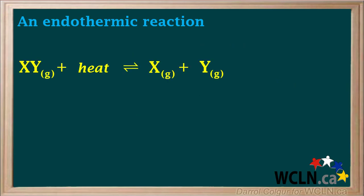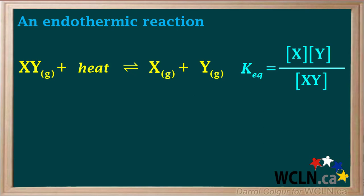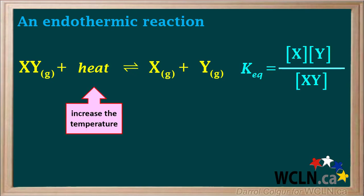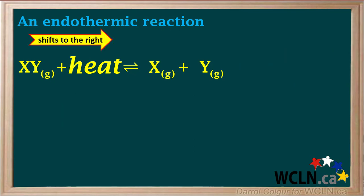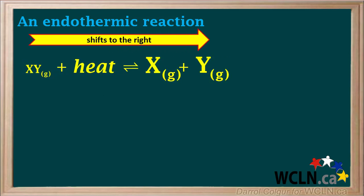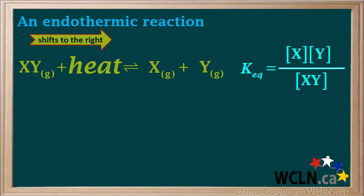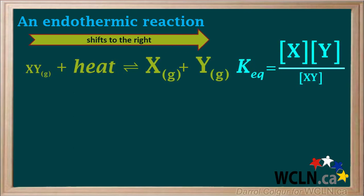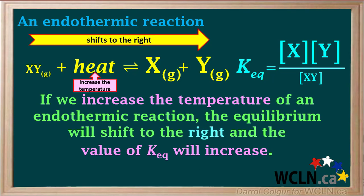Consider an endothermic reaction: XY + heat ⇌ X + Y. The KEQ expression is the concentration of X times the concentration of Y over the concentration of XY. If we increase the temperature, heat is added as a stress, and the equilibrium shifts to the right. The concentrations of products increase, the concentration of reactant decreases, so the numerator increases and the denominator decreases — the value of KEQ increases. Therefore, increasing the temperature of an endothermic reaction shifts equilibrium to the right and increases KEQ.